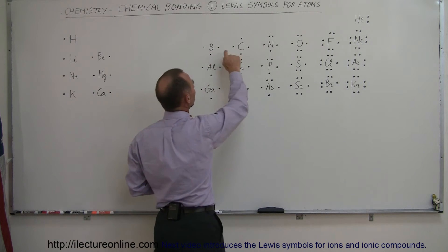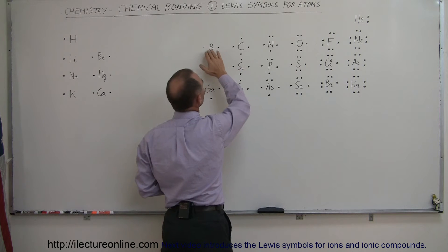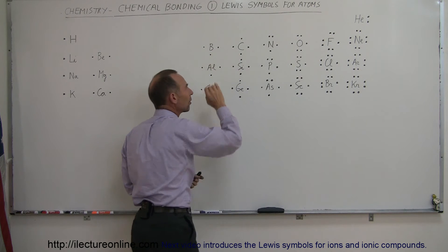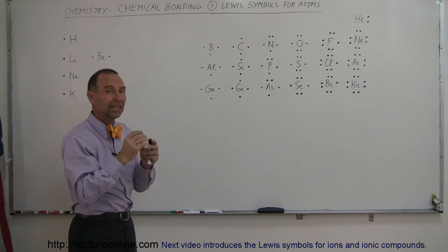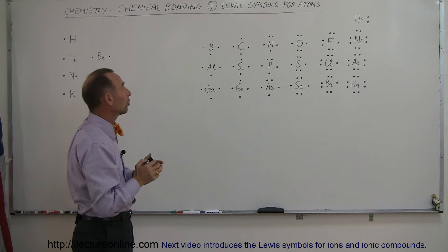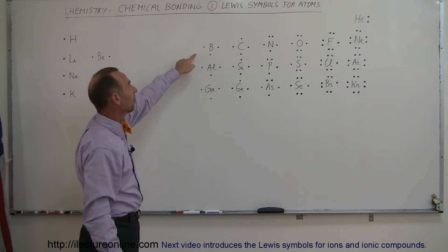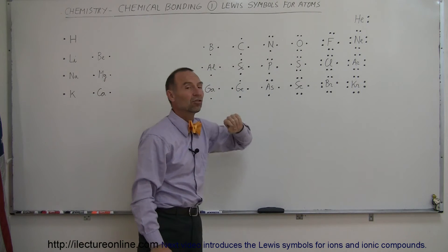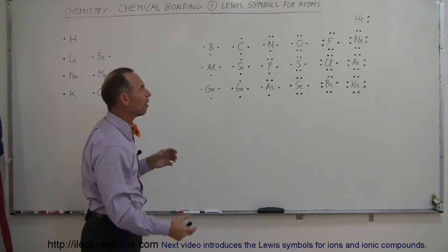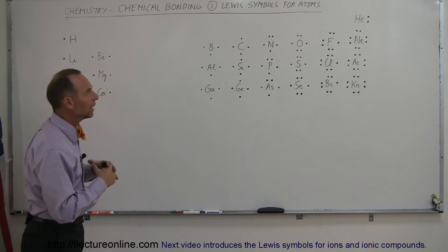If we go to the elements over here, boron, carbon, notice that we're ignoring the electrons in the innermost energy level in the 1s orbital and only talk about the electrons in the second energy level which are going to be involved in any sort of bonding with any other atoms.